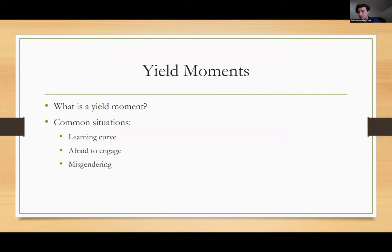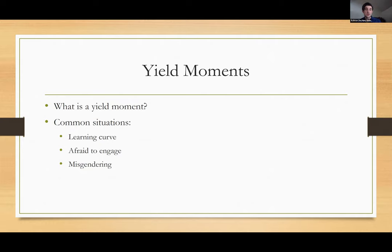Now we're going to talk about yield moments. A yield moment is a situation where before you're interacting with a person, you kind of take that pause. If I go into a doctor's office, all of my health insurance is listed as female because I have all the bits and pieces. A yield moment would be them looking, seeing Ashton Daly with an F on the top of the page, walking up to me, seeing me who presents as a man, and then having that moment of pause. How do you engage with someone when you might not know their pronouns, when they present in a very gender ambiguous way, when their name and the assigned sex on the paperwork doesn't necessarily match the person in front of you?